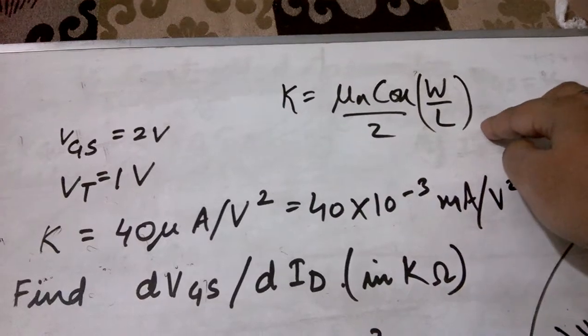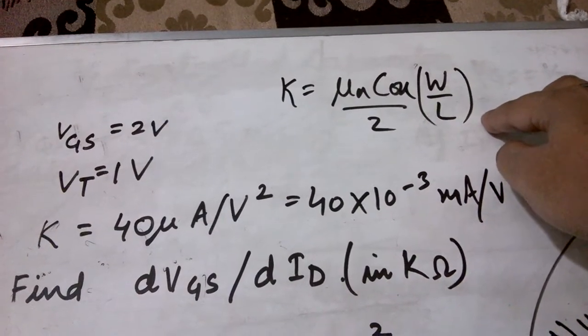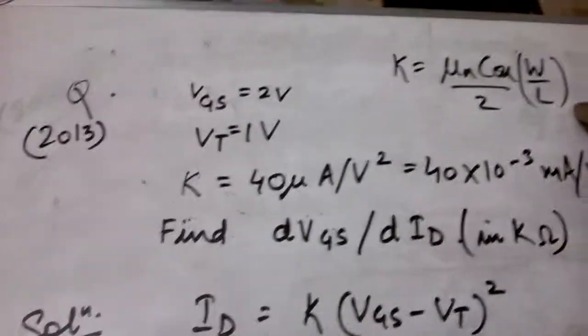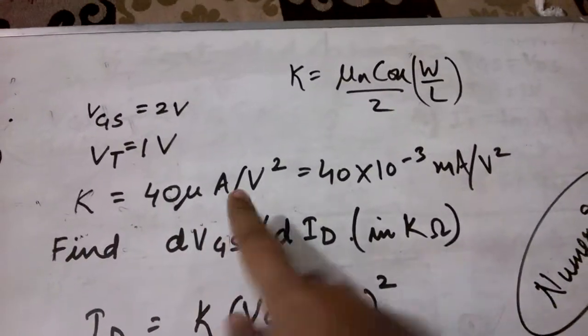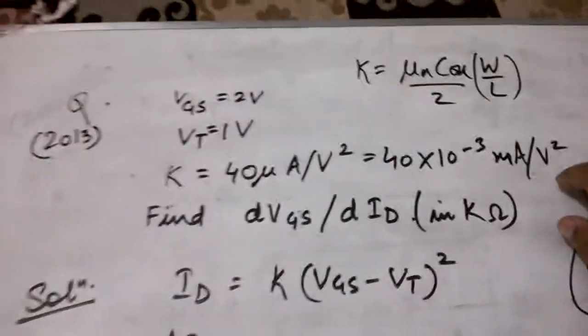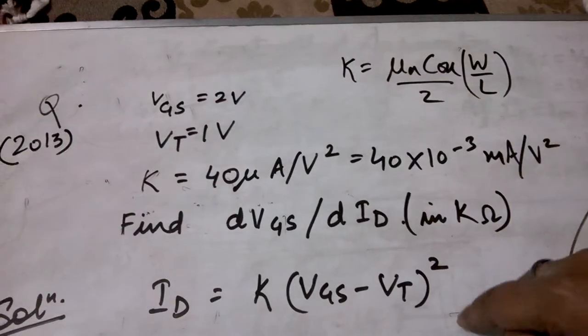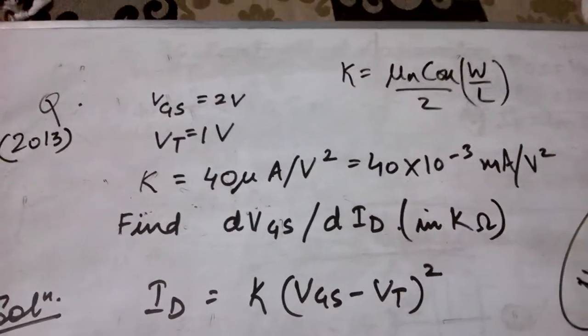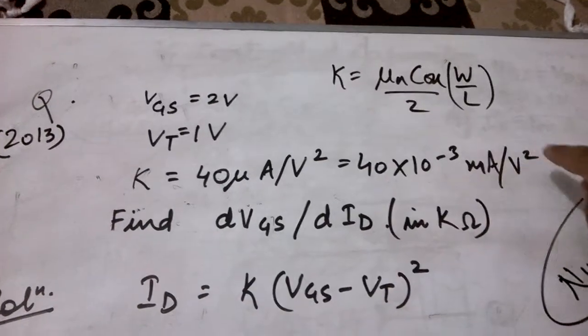K is given to us, and since it is given in micro ampere per volt square, we'll convert it to milli ampere per volt square since in the result it is to be used in that form. Now we also know that the device is in saturation, so we can write down the equation for current.